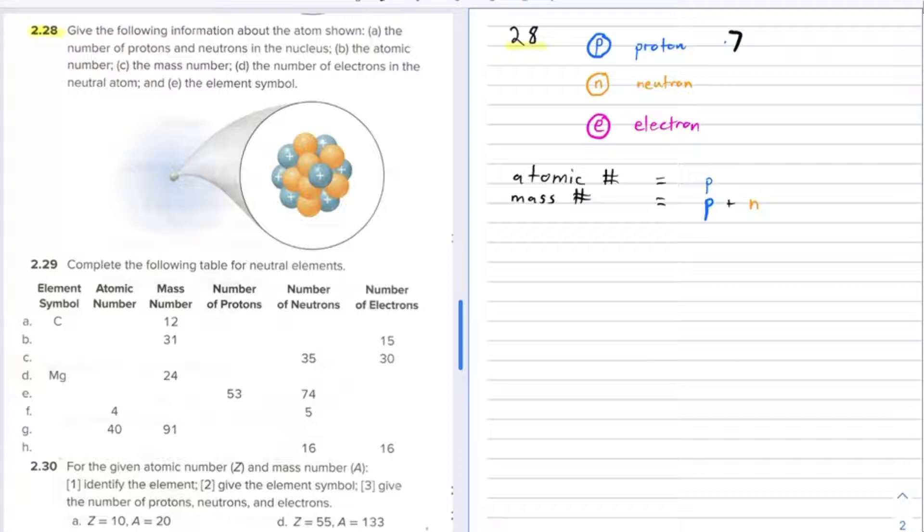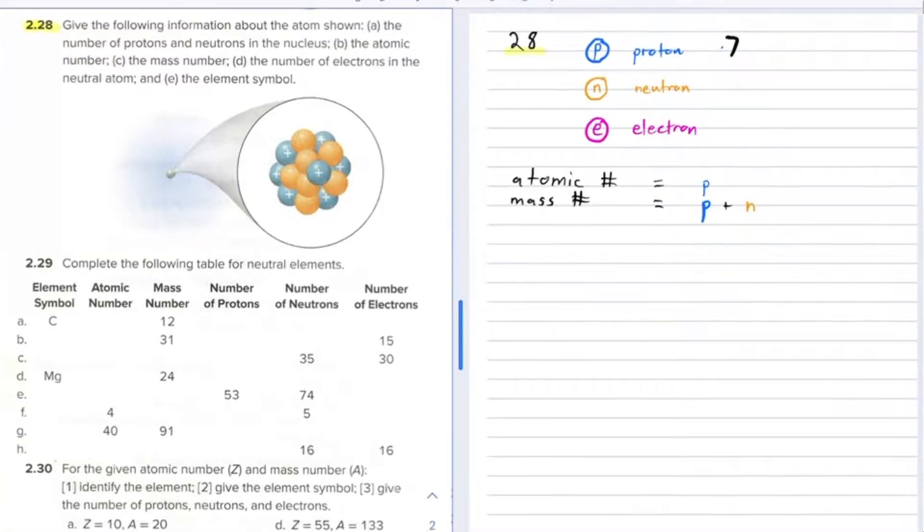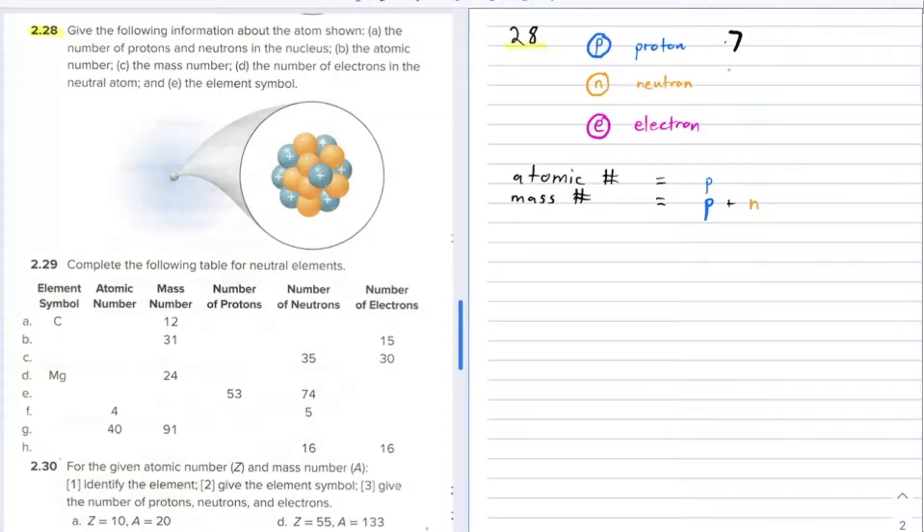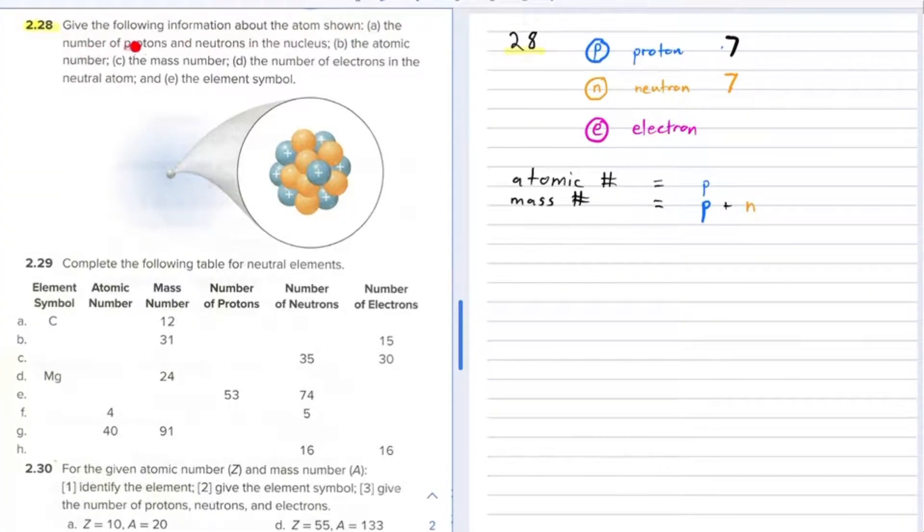And for neutrons: 1, 2, 3, 4, 5, 6, 7 neutrons as well. There's not always the same number of protons and neutrons, but in this case there are. So that answers part A, the number of protons and neutrons in the nucleus.